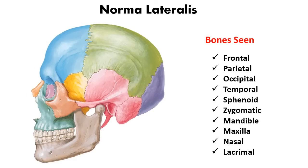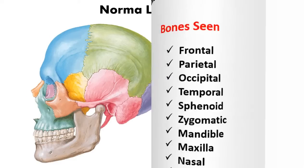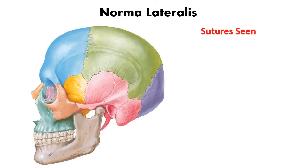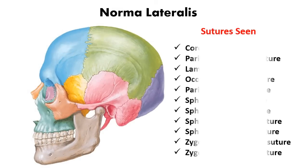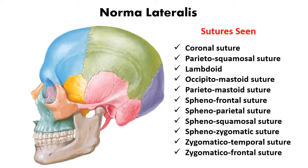Now, the sutures seen in the norma lateralis: you will see the coronal suture between the frontal and the parietal bone, the parietosquamosal suture between the parietal and the temporal bone, and the lambdoid suture between the parietal and the occipital bone.